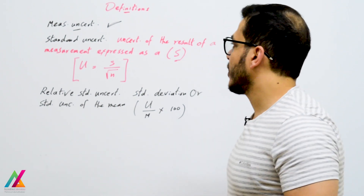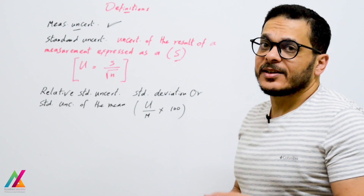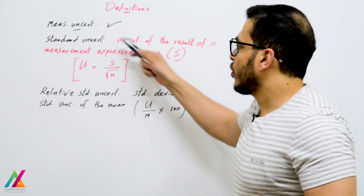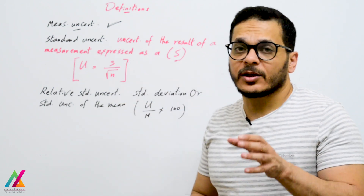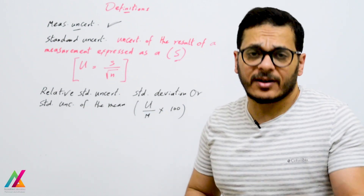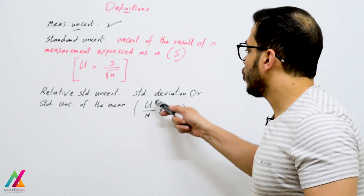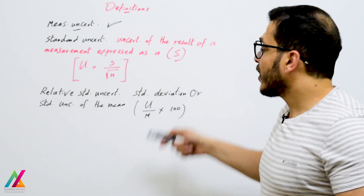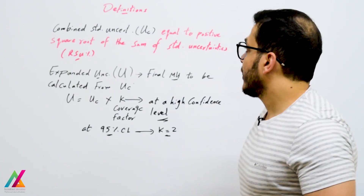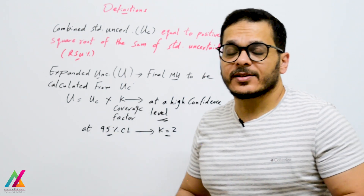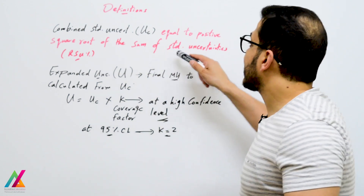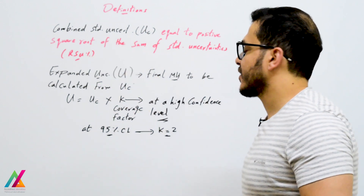Measurement uncertainty definitions: Standard uncertainty is the uncertainty of a measurement result expressed as a standard deviation, equal to standard deviation divided by the square root of n (number of replicates). Relative standard uncertainty equals the standard uncertainty divided by the average of recovery, multiplied by 100. Combined uncertainty is the combination of all standard uncertainties calculated — equal to the positive square root of the sum of squared standard uncertainties or relative standard uncertainties.